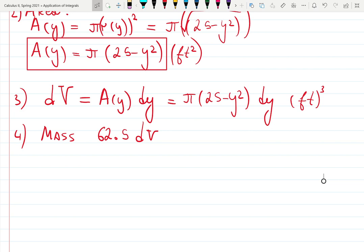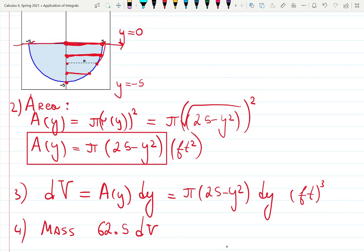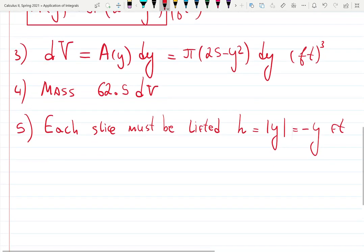Now each slice must be lifted a height h, which is absolute value of y, which is minus y feet. Because we are below the x-axis. So we need to lift the water up by how much. The maximum amount of water we're lifting is minus five, or five units up. But at every single point, it's a different amount of water. That's why it's a variable y.